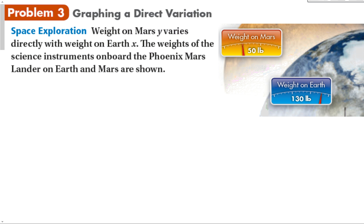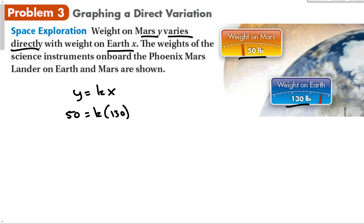Weight on Mars varies directly with weight on Earth, x. The science instruments on the Phoenix Mars lander weigh 50 pounds on Mars and 130 pounds on Earth — less gravity on Mars, so things weigh less. Mars is y, Earth is x, so y equals some constant times x. The weight on Mars equals some constant times the weight on Earth. Taking 50 divided by 130, we get a constant of about 0.38.